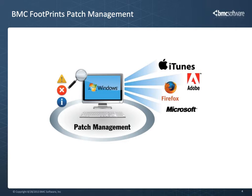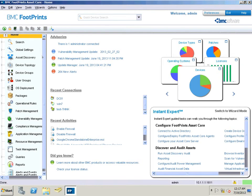One of the main advantages of BMC Footprints Asset Core is that you can patch more than just Microsoft applications. It enables patch scanning and deployment for Microsoft and non-Microsoft products such as Mozilla Firefox, Adobe, Real Player, Apple QuickTime, iTunes, WinZip, and more. Using BMC Footprints dynamic groups functionality, you can easily target groups of devices for updates based on patching requirements and computer attributes, then monitor the patching process in real time and receive detailed information regarding any errors so you can take immediate corrective measures.